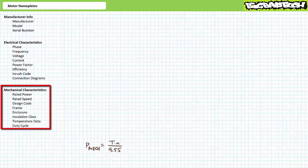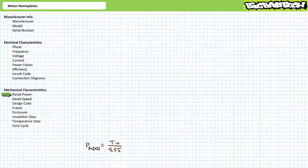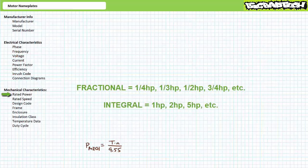The next larger group on a motor nameplate pertains to mechanical aspects. The most important entries specify mechanical power, rated speed, design, frame, enclosure, insulation class, temperature data, and duty cycle. The power entry is output mechanical power in units of horsepower or watts, where one horsepower equals 746 watts. Rotating mechanical power is the product of torque in newton-meters times rotational speed in RPM divided by 9.55. Motors can be sized as fractional — less than one horsepower — or integral — greater than one horsepower.